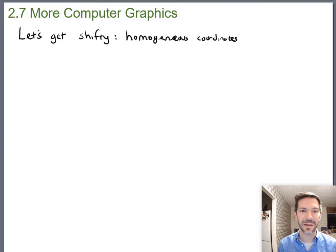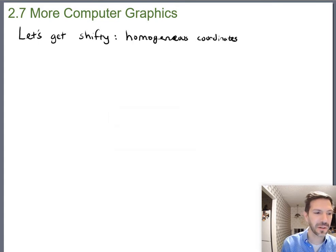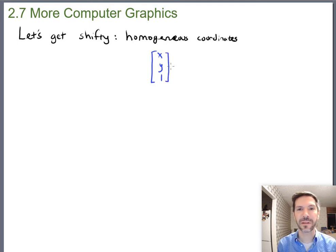So it's time to get shifty. Let's introduce something called homogeneous coordinates. So homogeneous coordinates are still 2D coordinates, but they actually use three entries. Homogeneous coordinates look like this: x, y, one. The one is always one, and it's not graphed.